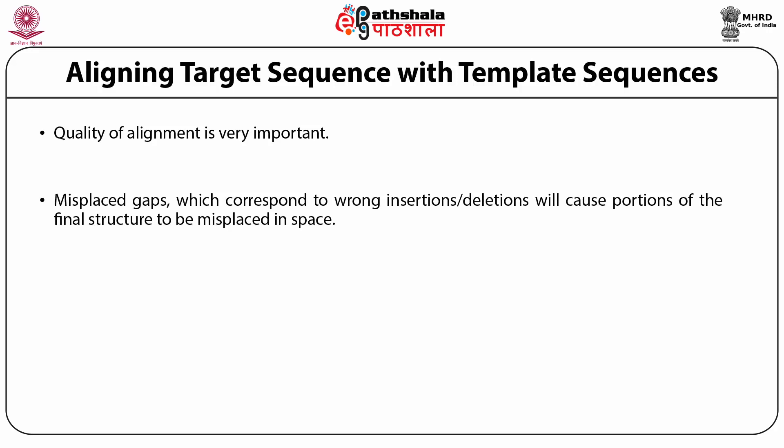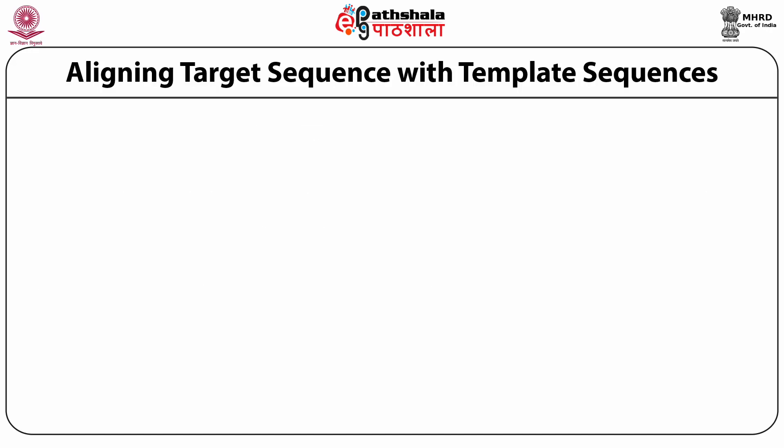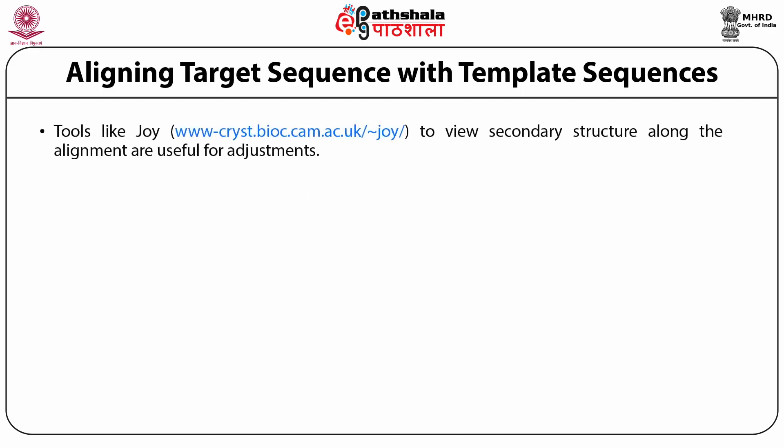Particularly when assigning gaps in the alignment — if you make errors there, you are erroneously adding insertions and deletions which will cause portions of your final structure to be seriously misplaced. So even if one uses automatic alignment methods, one needs to make a careful manual check of the quality of the initial alignment. For this, one could use a nice tool called Joy, which allows you to view the alignment along with predicted secondary structures.